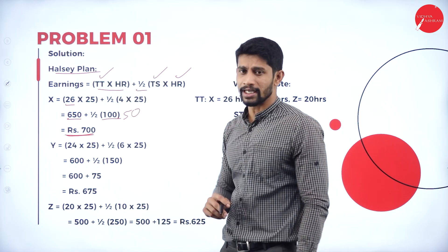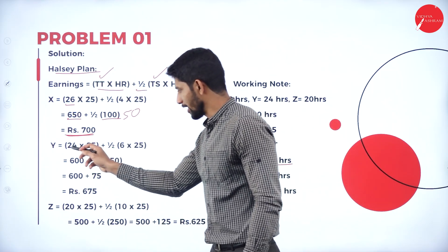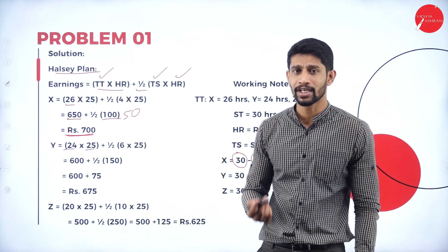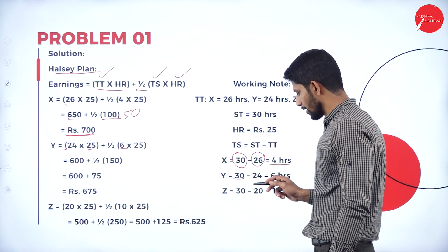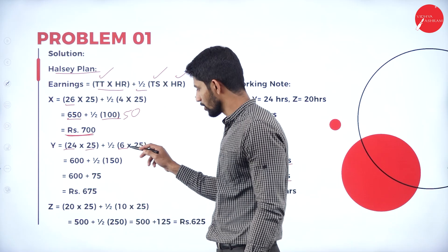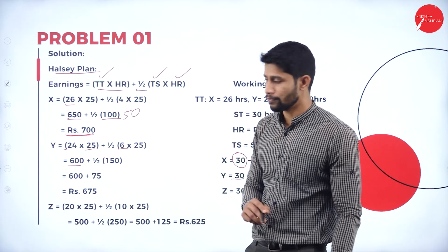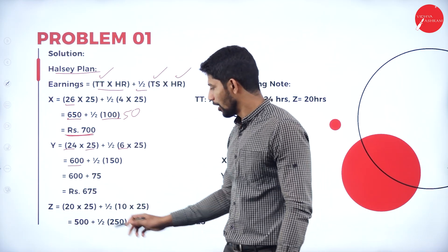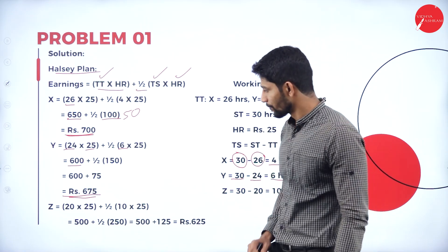Next, Mr. Y — same formula: TT × HR + half of TS × HR. Time taken is 24 hours, hourly rate is 25. Time saved by Mr. Y: standard time is 30 hours, he completed in 24 hours, so time saved is 6 hours. So 24 × 25 = 600 plus half of 6 × 25 = half of 150 = 75. So 600 plus 75 equals 675 rupees. Next, Mr. Z — time taken is 20 hours.